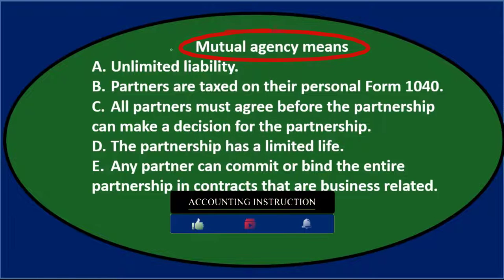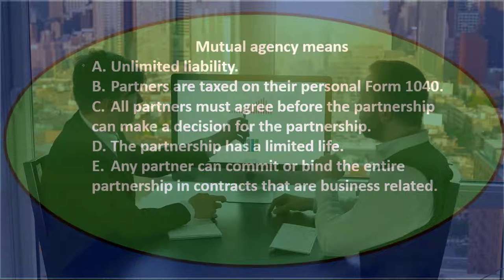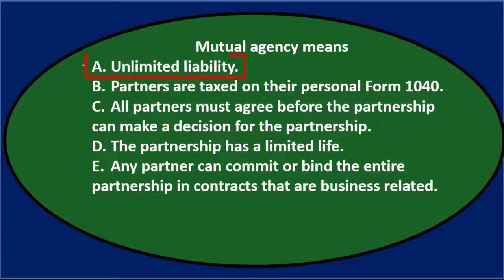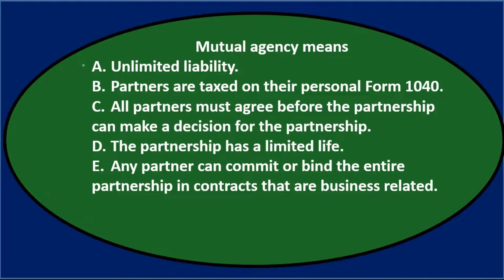Let's go through this and see if we can eliminate some options. Mutual agency means A) unlimited liability — no. When we think of mutual agency, we're in the partnership chapter, so mutual agency probably has something to do with partnerships. It could have other meanings in other areas around agency issues, but in this context we're focused on partnerships.